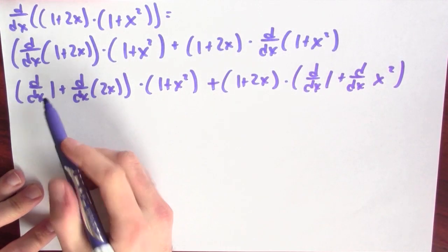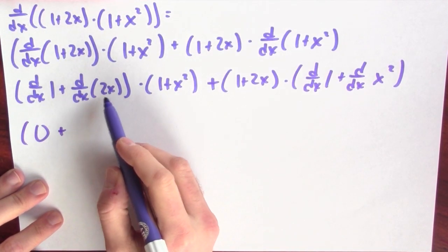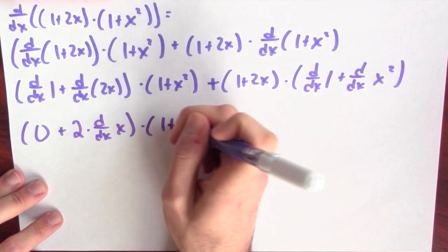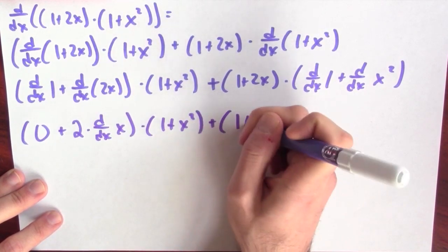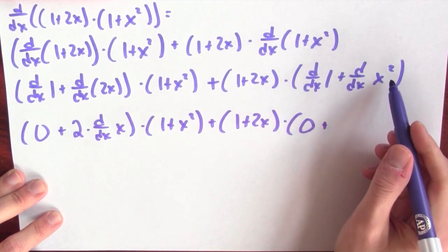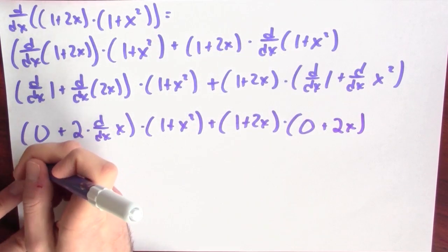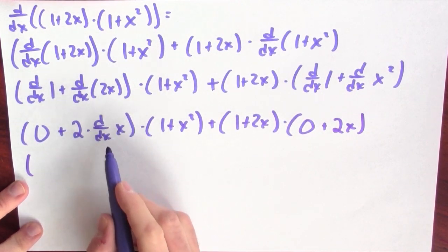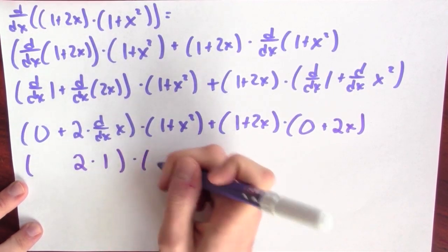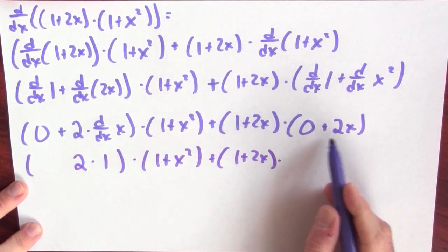The derivative of 1 is the derivative of a constant function, which is just 0. This is the derivative of a constant multiple, so I can pull that constant multiple out. Times (1 + x²), plus (1 + 2x) times: the derivative of 1 is 0, plus the derivative of x² is 2x. Now I've got 0 plus 2 times the derivative of x. The derivative of x is just 1, so that's 2 times 1, times (1 + x²), plus (1 + 2x) times (0 + 2x).